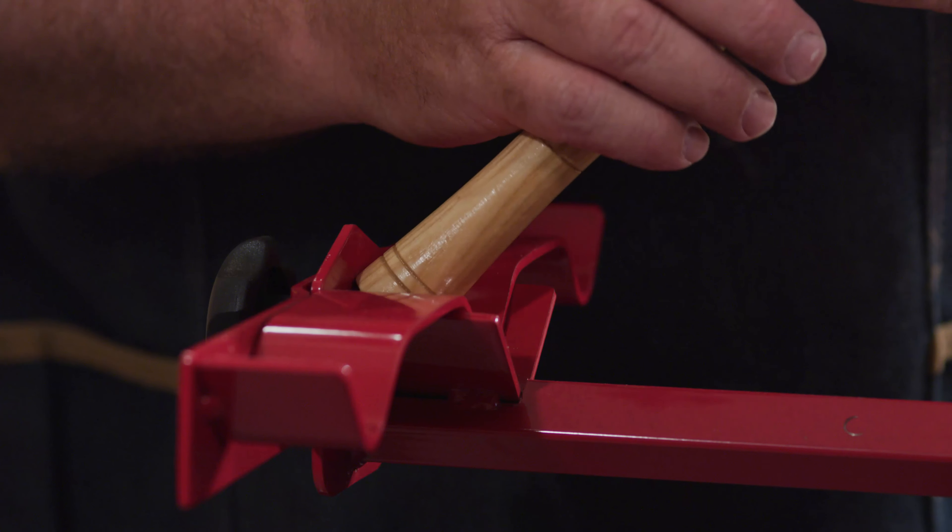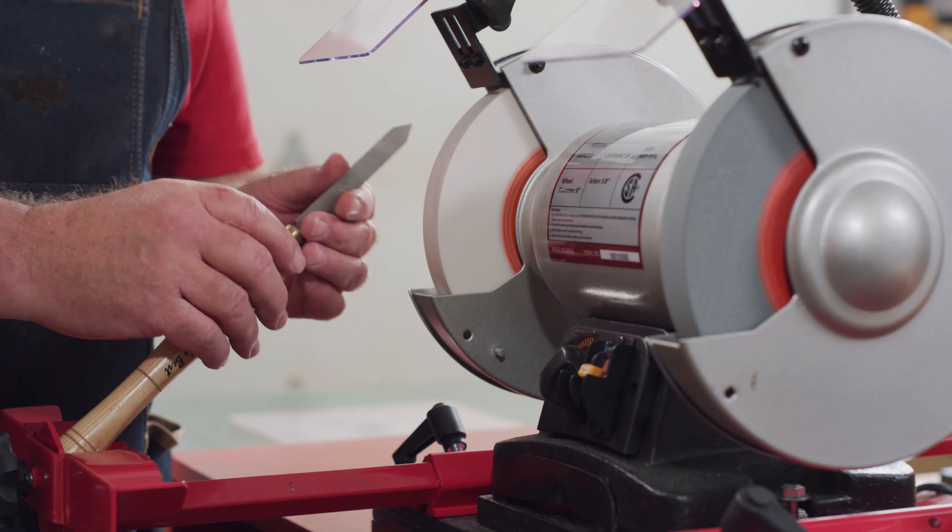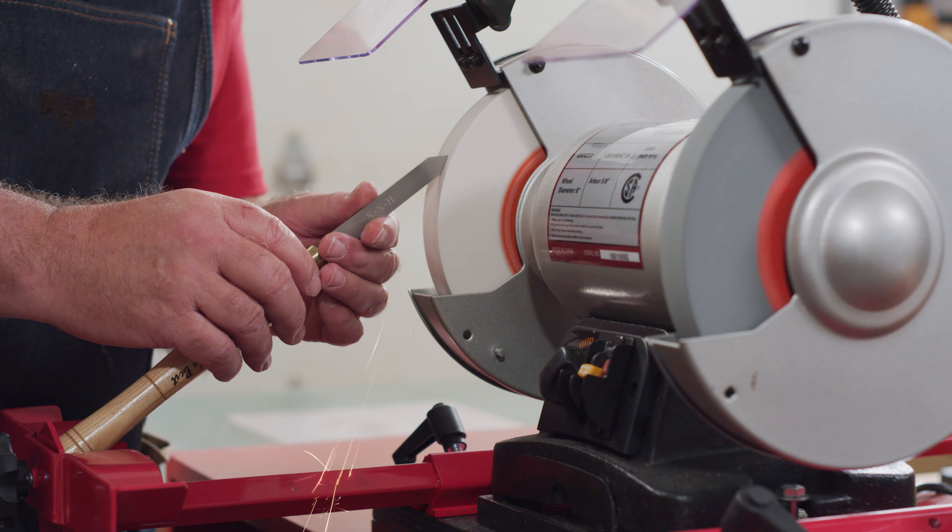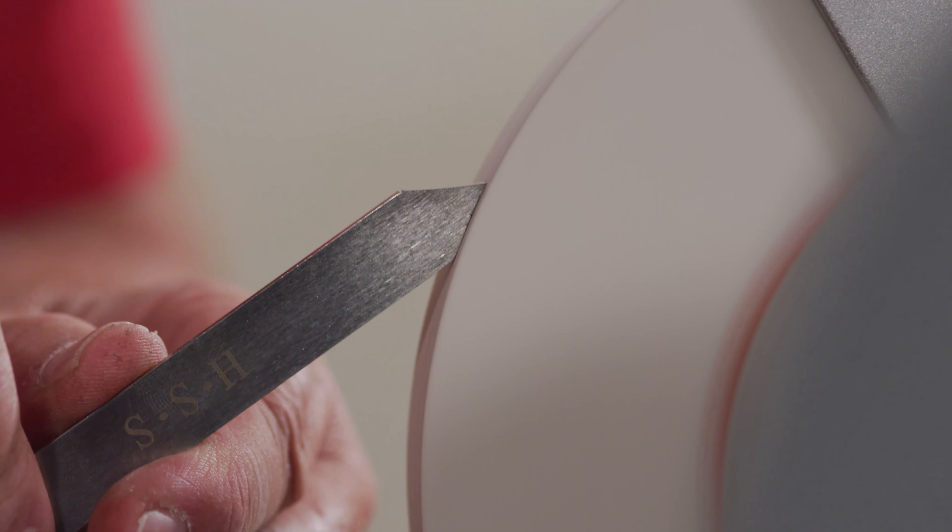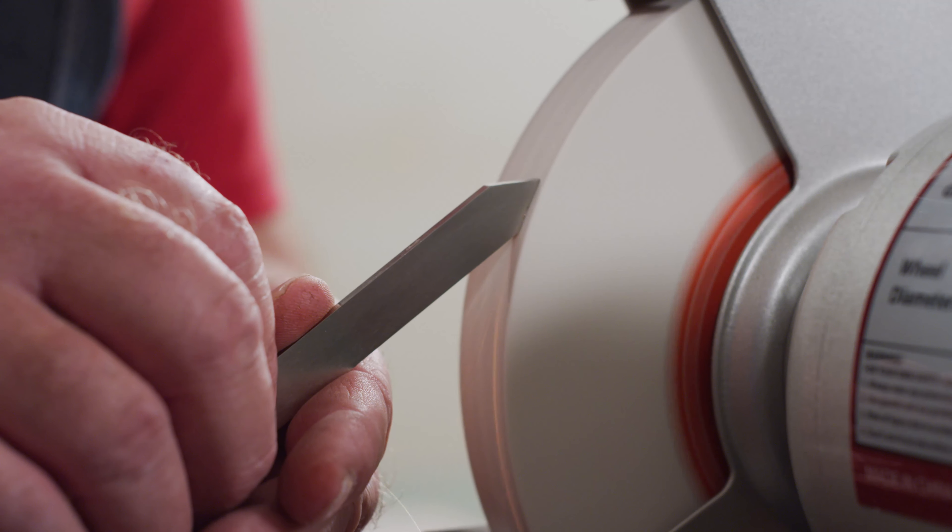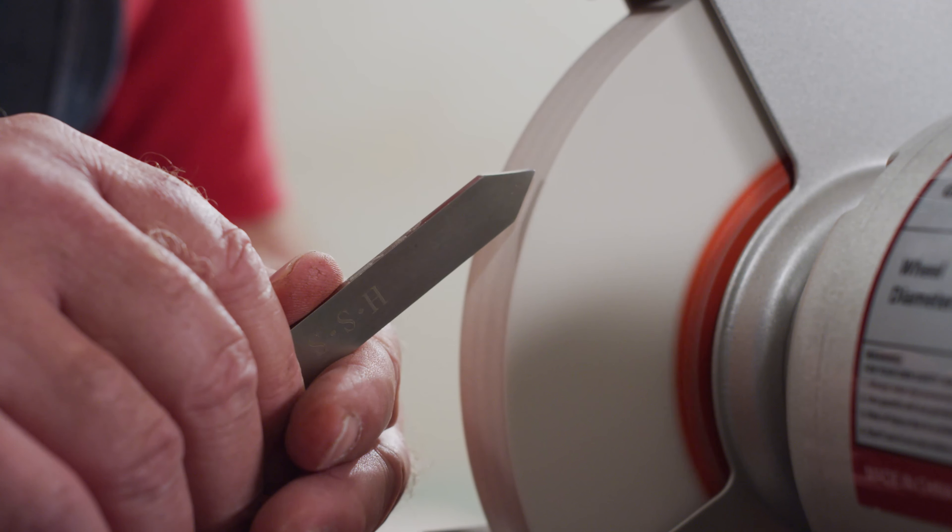To sharpen the parting tool, position it in the center pocket of the jig. As done with the skew and gouge, adjust the arm until the cutting edge of the parting tool rests flat against the grinding wheel. Adjust as necessary and then sharpen both opposing edges of the tool.